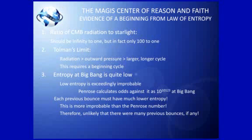A high entropy universe is where most of your good, useful energy is gone — it's in a disorganized state, scattered and undifferentiated. What Roger Penrose did was calculate what the odds against that low entropy universe occurring were. It turns out it's 10, raised to the 10, raised to the 123, to 1 against our low entropy universe.